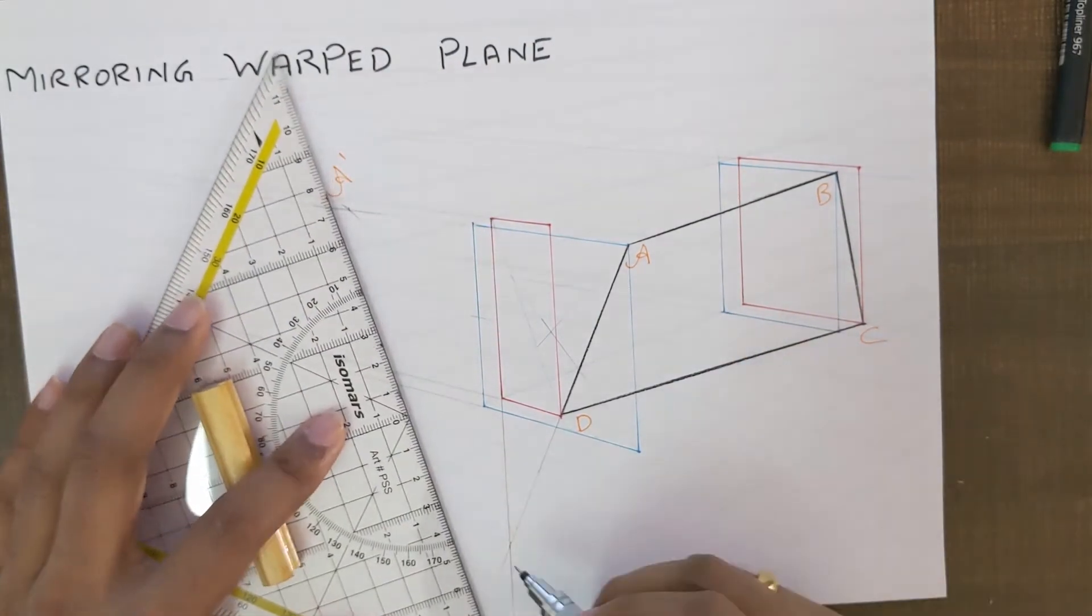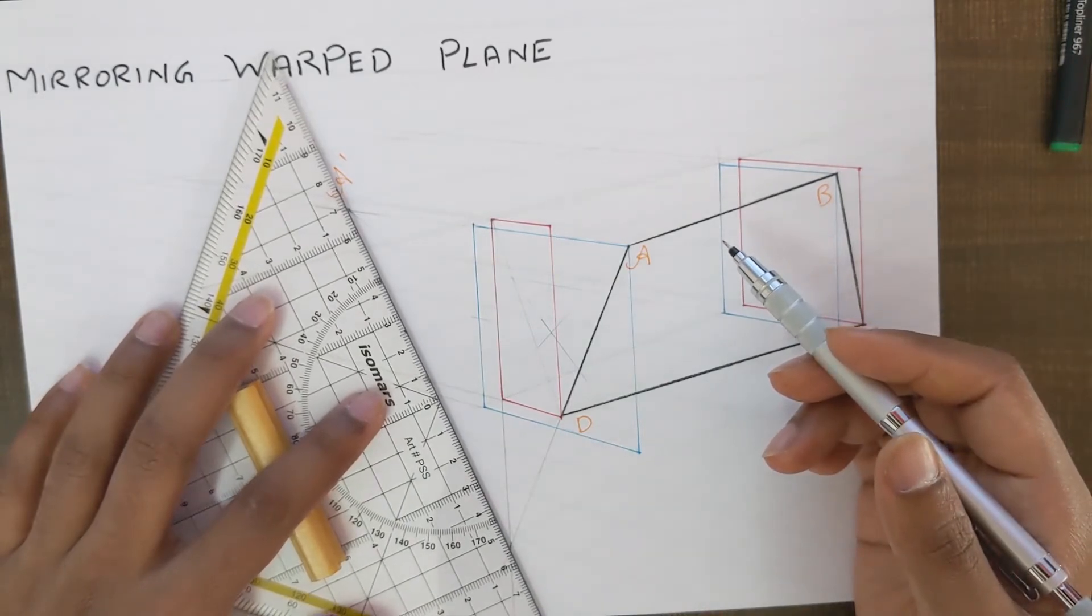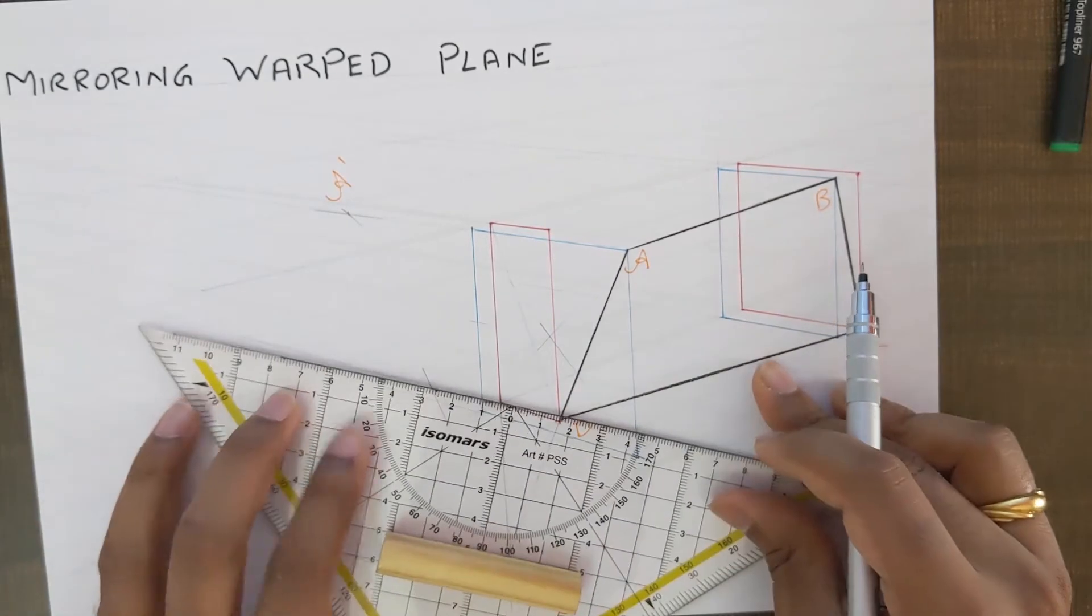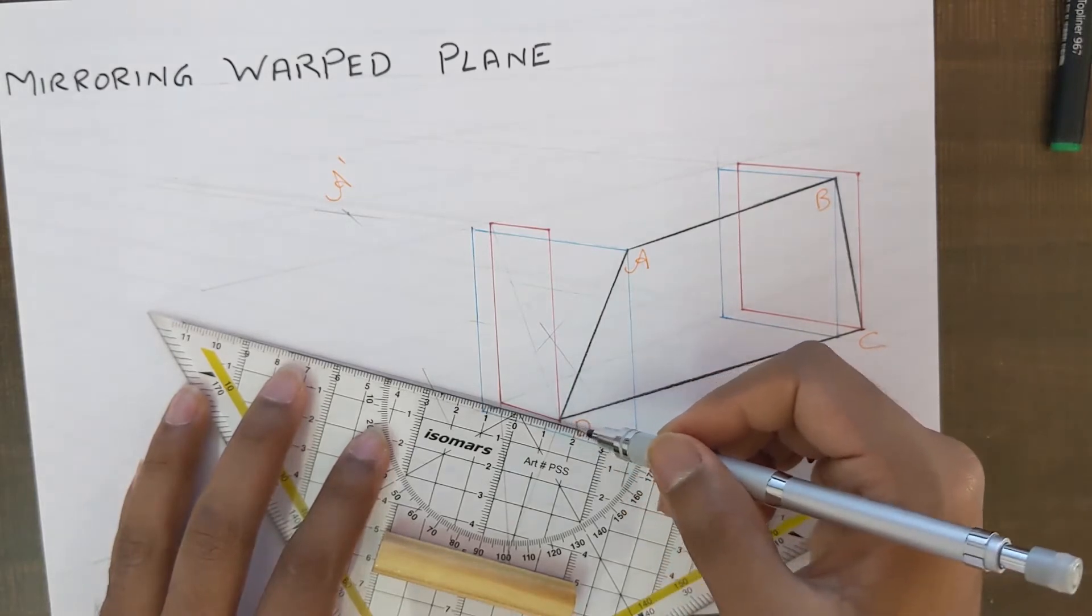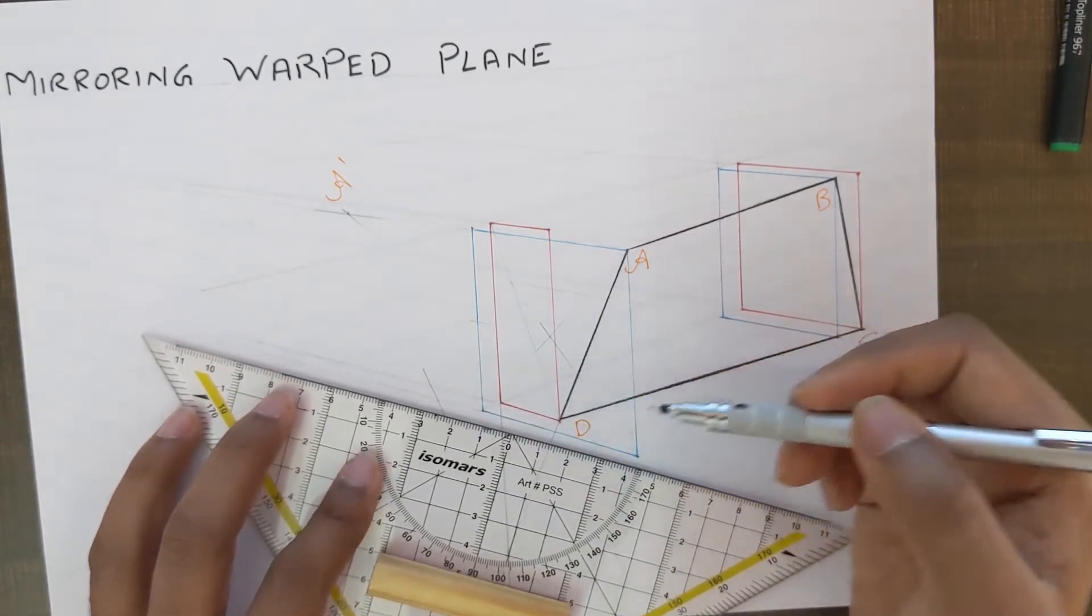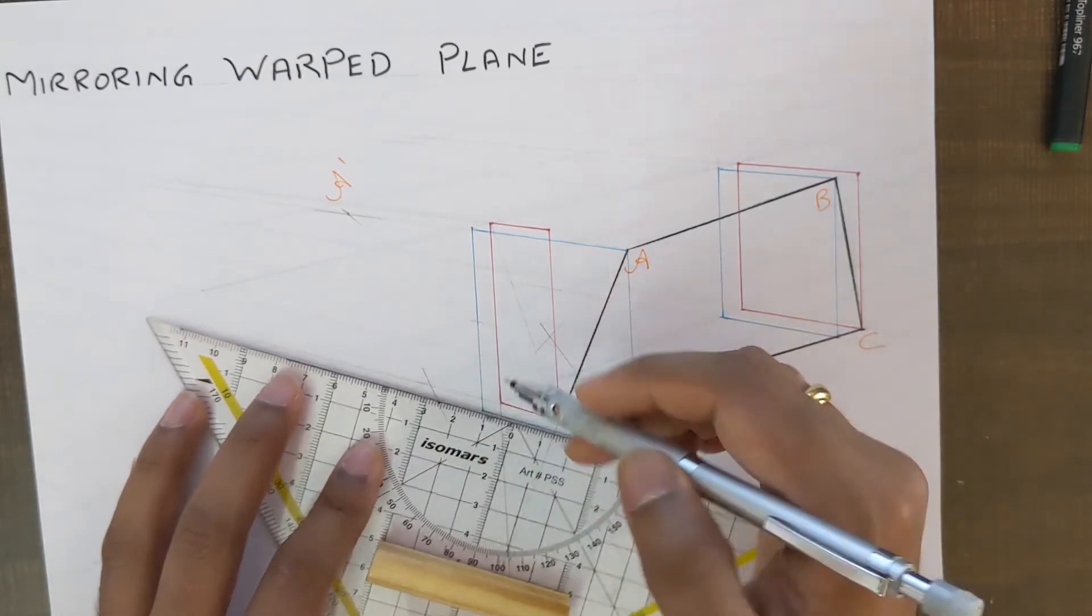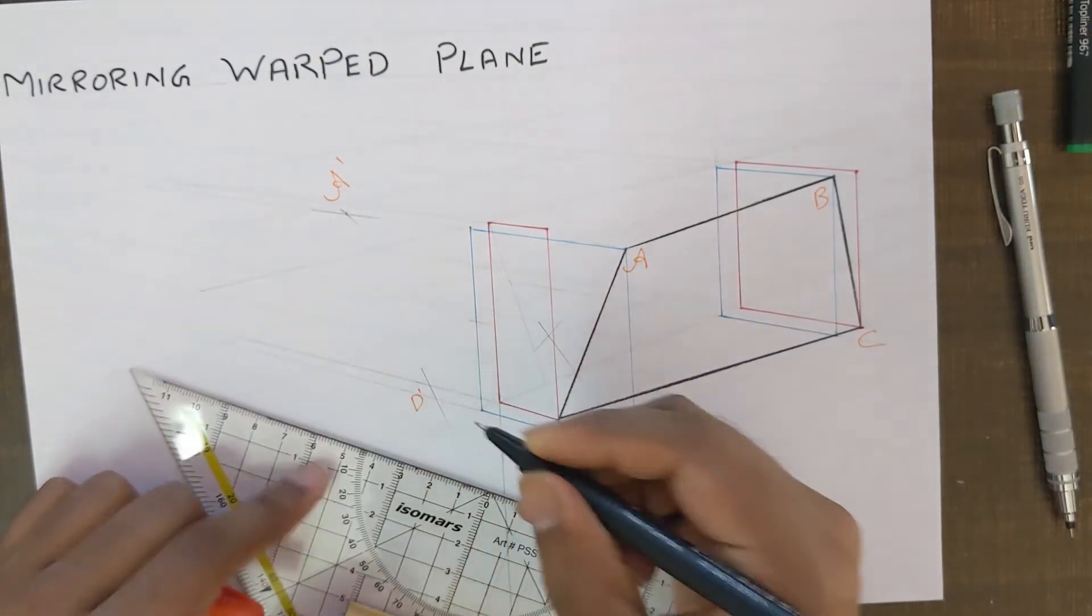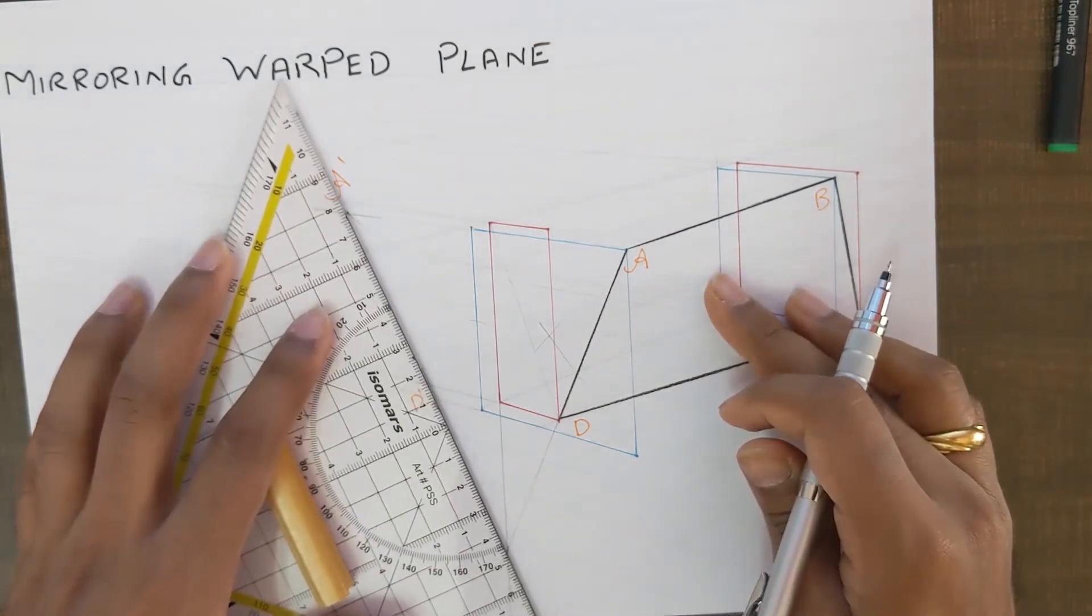Now if we just connect this new point with the point A dash, where it will intersect with the line extended from the bottom line of this red color rectangle, okay like this. This is nothing but our D dash. So we can just go ahead and connect this.